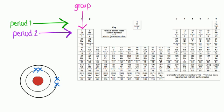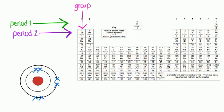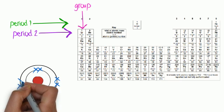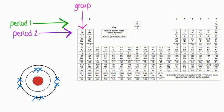Beryllium is in group 2, and has 4 electrons: 2 in the first energy level, 2 in the outer shell. Boron is in group 3, and has 5 electrons: 2 in the first shell, and 3 in the outer shell. Carbon is in group 4, it has 6 electrons in total: 2 in the first shell, and 4 in the outer shell. Nitrogen is in group 5, and has 7 electrons: 2 in the first shell, and 5 in the outer shell. Oxygen is in group 6, and has 8 electrons: 2 in the first shell, 6 in the outer shell.